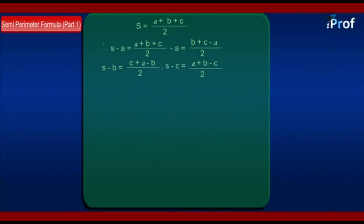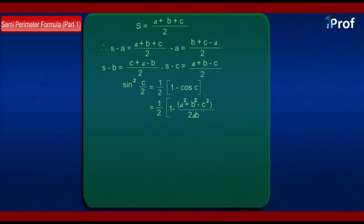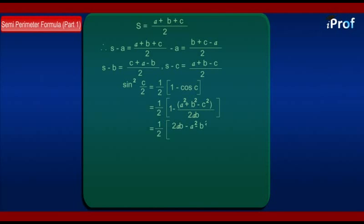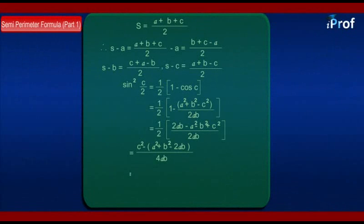Applying them, we get sin²(C/2) is equal to one-half of (1 minus cos C). We use the cosine formula: cos C equals (A² plus B² minus C²) divided by 2AB. This comes out to be equal to half of (2AB minus A² minus B² plus C²) divided by 2AB. Or, over 4AB: C² minus (A² plus B² minus 2AB).